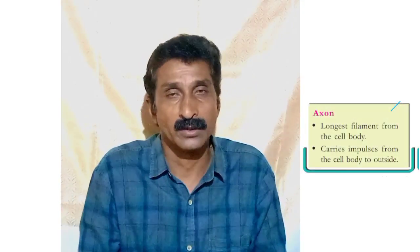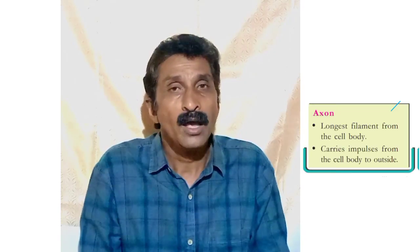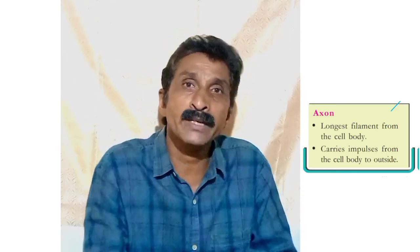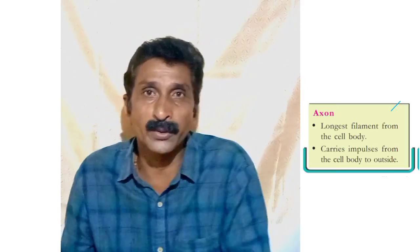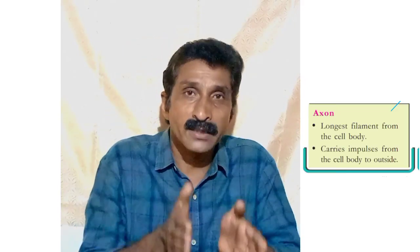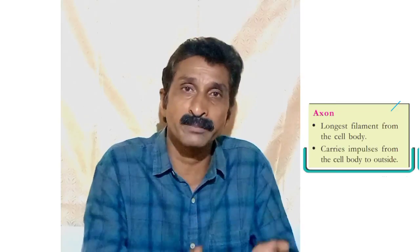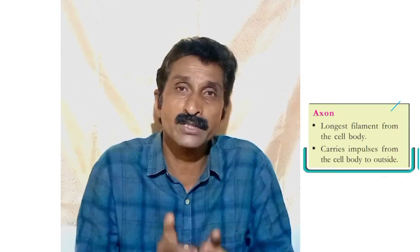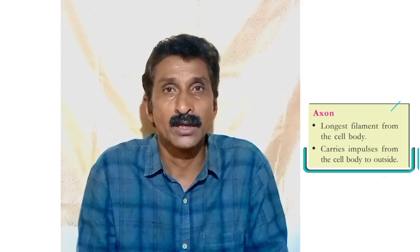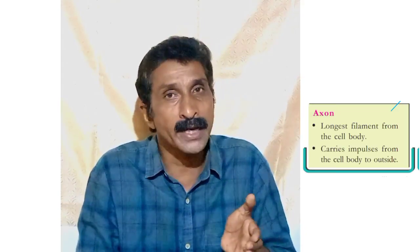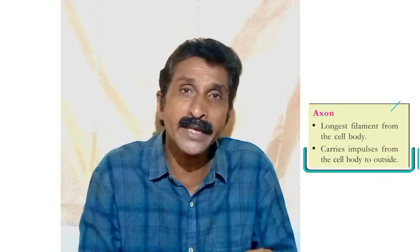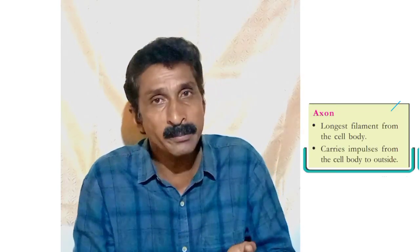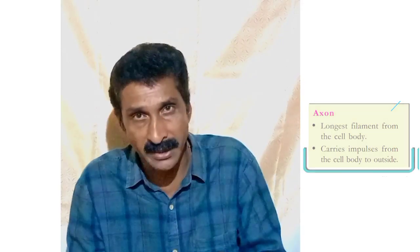Now we will learn about each part one by one. The first part is axon. Axon is the longest filament arising from the cell body. It carries impulses or messages from the cell body to the axonite.